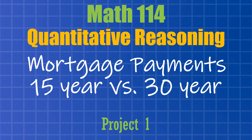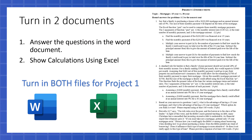In Math 114 at Liberty, we have projects in addition to homework and quizzes. We have three projects total. The first project is the mortgage payments project, where we compare 15-year mortgages versus 30-year mortgages. This project is done in module 4, so you can find the assignment there.